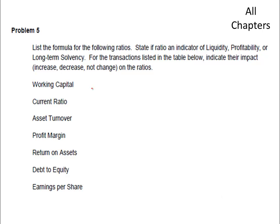In this part of the review, we're asked to list the formulas for these ratios and indicate whether they're liquidity, profitability, or long-term solvency ratios. Working capital is current assets minus current liabilities. Anything that has to do with the currents has to do with liquidity, so this is a liquidity ratio.